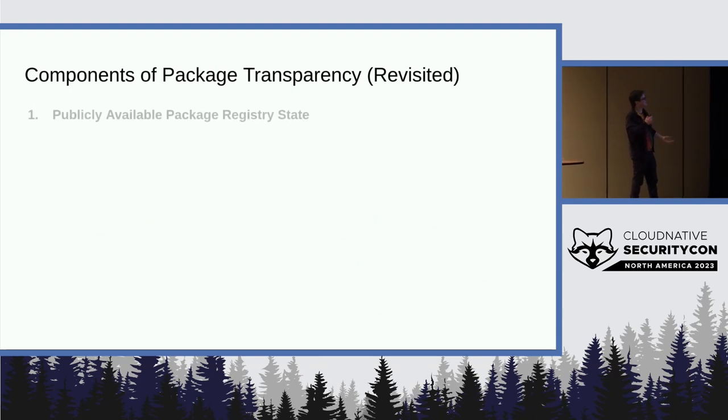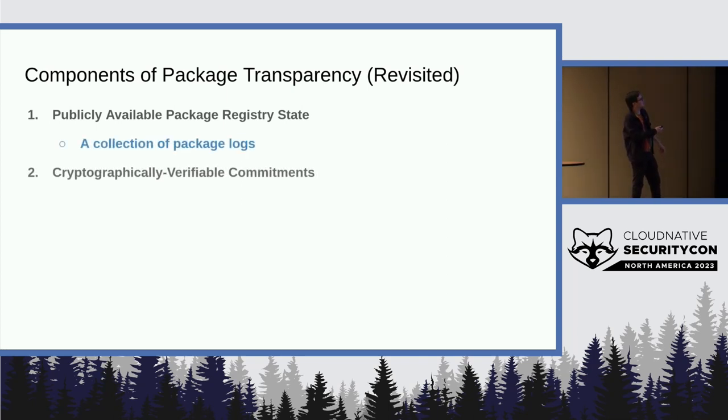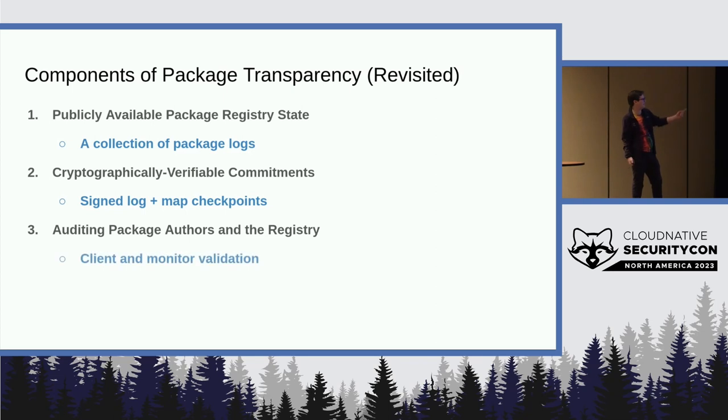So revisiting our three parts of package transparency. We needed publicly available registry state that we got with a collection of package logs. We needed cryptographically verifiable commitments that we got using signed log and map checkpoints. We needed auditing of package authors in the registry. And we do that using a client and monitor system. Once again, akin to certificate transparency.